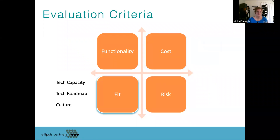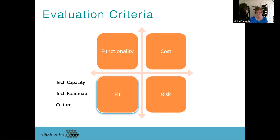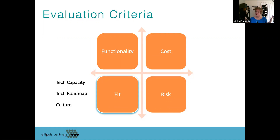Then there's fit with your organization — this is where your spidey sense comes in. We break it into three areas. First, capacity: do we have the staff and skills in-house or available to run this system? Second, technology fit: does the roadmap for the system have a future that's aligned with our future and where we want to go? Third, cultural fit: is the culture of this vendor aligned with our culture? That's a very hard one to define, but you know it when you see it.